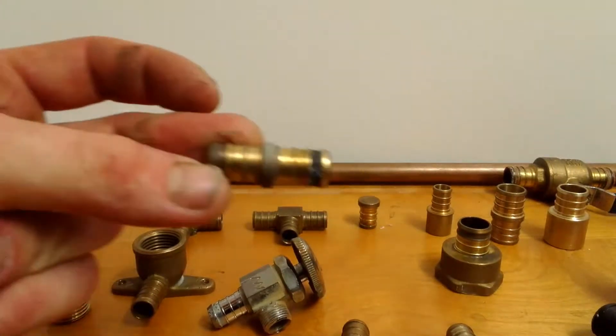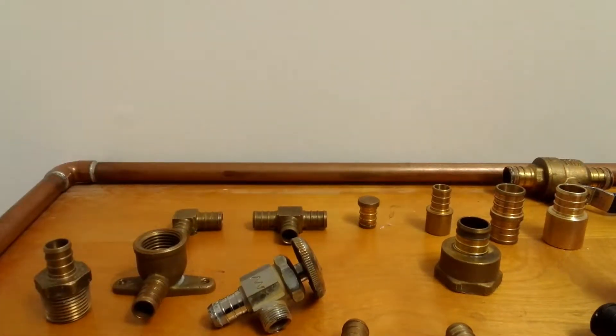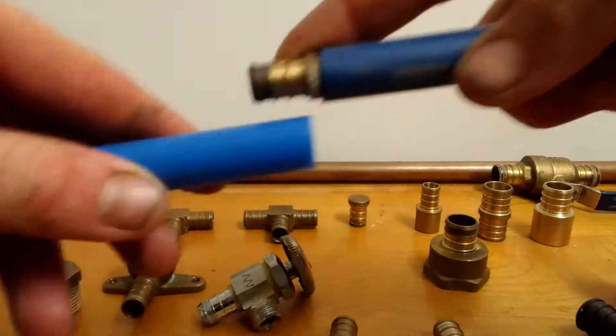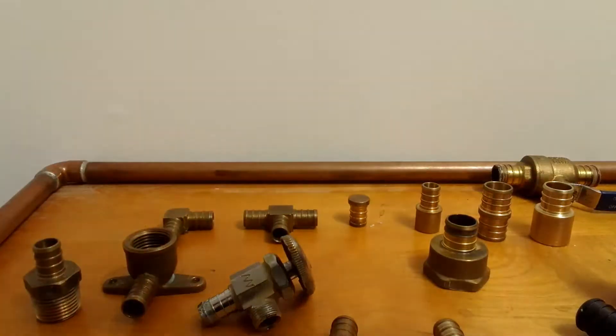This is a half inch PEX coupling. What you do is take one piece here, another one, and you join them together like that.